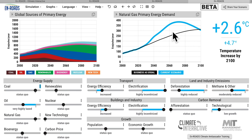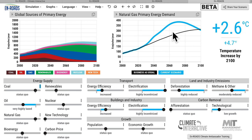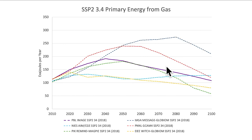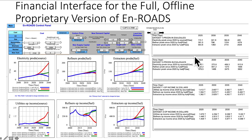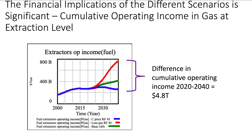I've just shown you exajoules of energy — what does that mean in financial terms? We looked at the full offline proprietary version of En-ROADS, which allows you to change various things and then explore financial implications — net income at the bottom for electric utilities of different types: coal, oil, gas, and renewables; refiners of coal, oil, and gas; extractors of coal, oil, and gas; operating income; and tables showing cumulative operating income over 2020 to 2040.